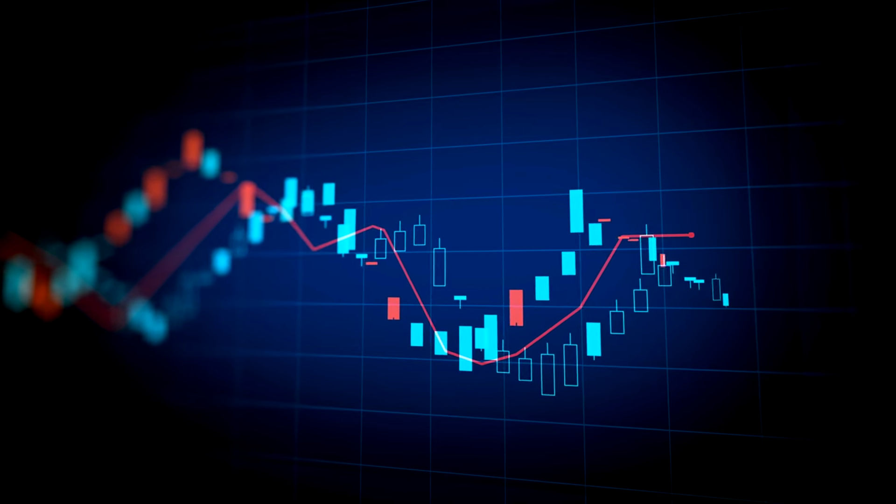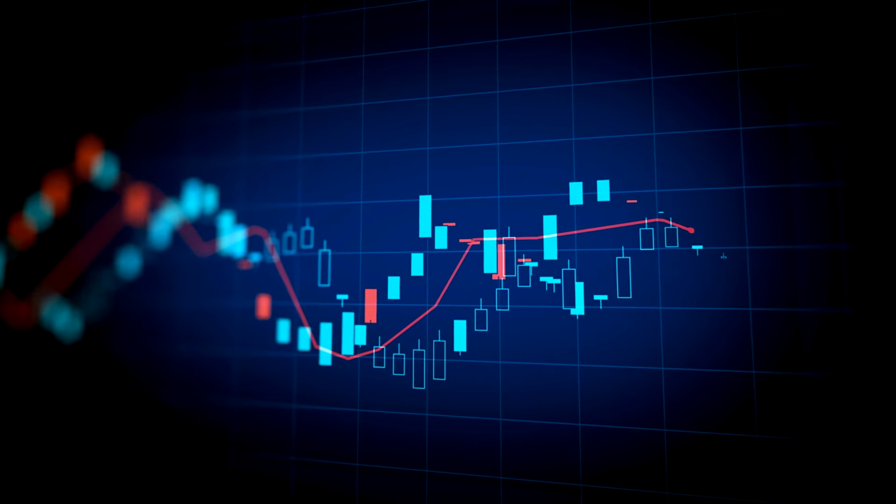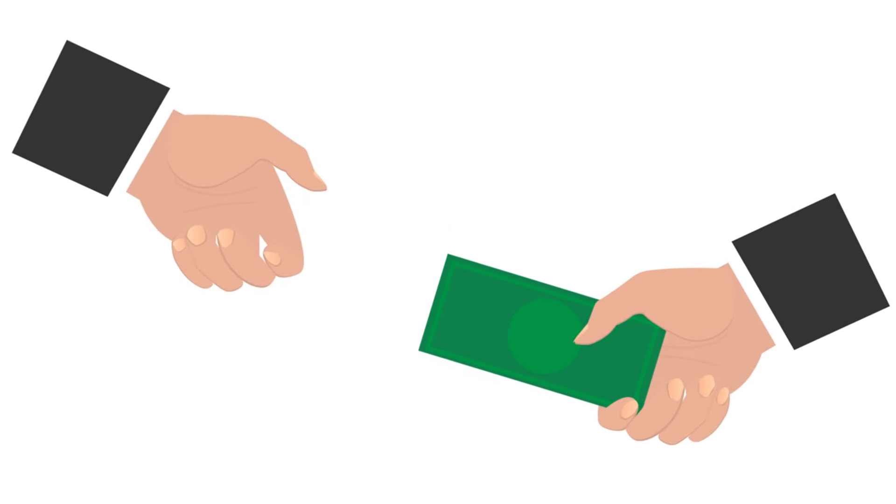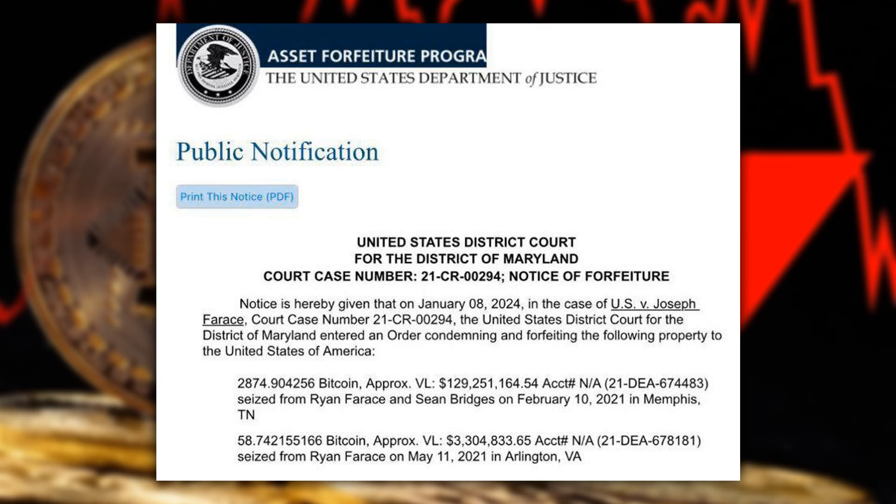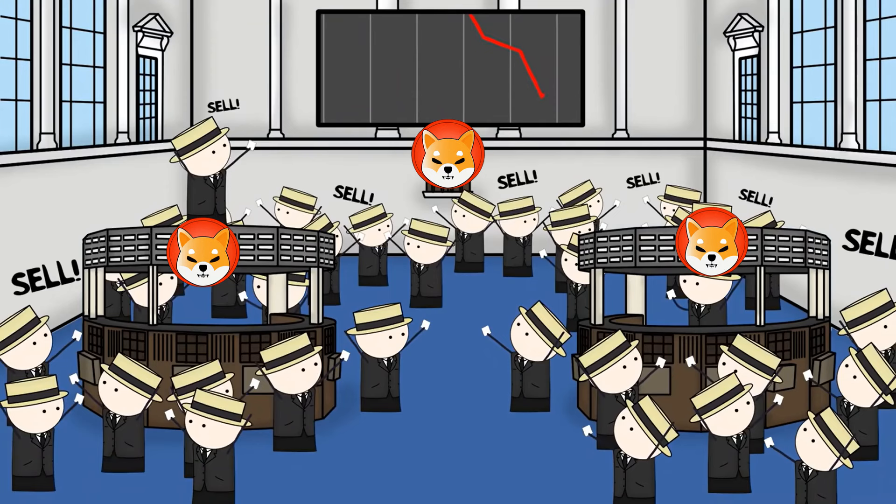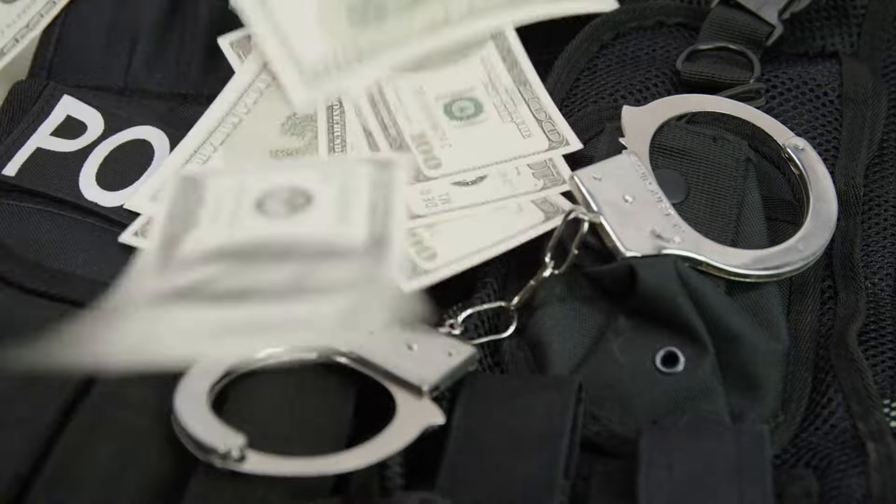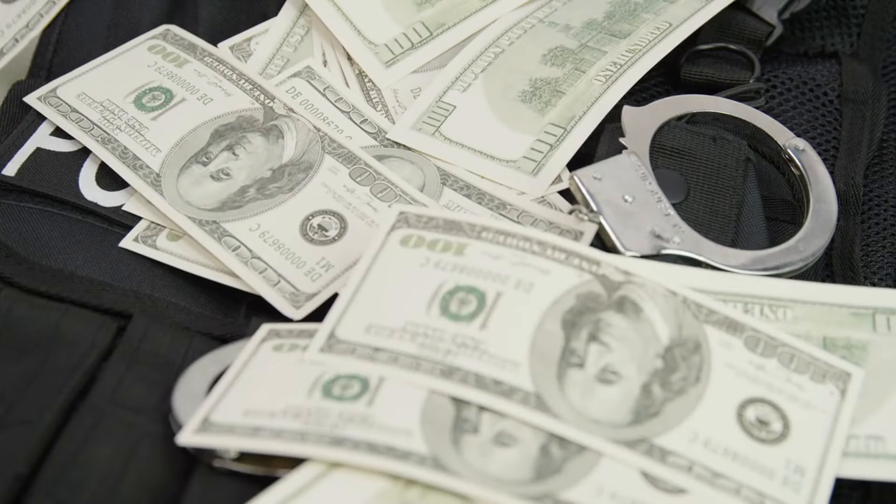The value of the seized cryptocurrency is then determined based on its market value at the time of seizure. Following forfeiture, the government decides on the method of disposal for the cryptocurrency, whether selling it on the market, auctioning it, or employing other means to convert it into traditional currency. Public notices are issued, alerting the public about the government's intention to sell or dispose of the cryptocurrency, and providing an opportunity for interested parties to claim any legitimate interest in the seized assets. The sale of the cryptocurrency is then executed, with the government directing the proceeds into its accounts. These funds are subsequently utilized for various purposes, which may include covering law enforcement expenses, victim restitution, or other designated uses.